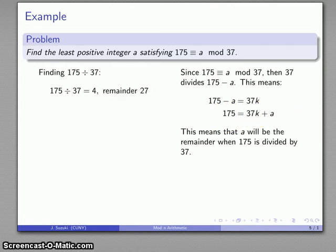175 divided by 37 is 4 with remainder 27, so 175 ≡ 27 mod 37.